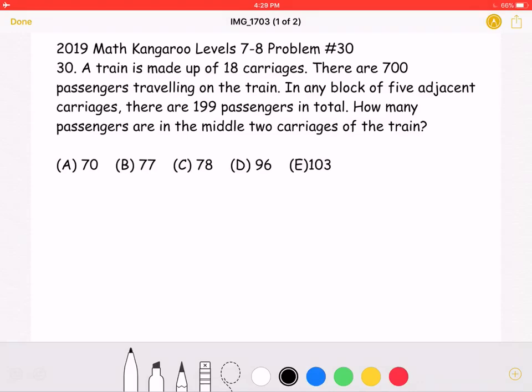How many passengers are in the middle 2 carriages of the train? A-70, B-77, C-78, D-96, or E-103?